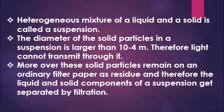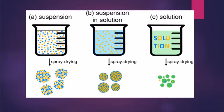This is called a suspension. The diameter of the solid particles in a suspension is larger than 10 raised to minus 4 meters, and that is why they can be filtered by ordinary filter paper. We get the residue on the filter paper when we filter it by filtration. So a suspension is a heterogeneous mixture of a liquid and a solid.